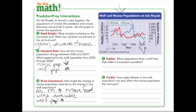Question four asks what adaptations a wolf has that make it a successful predator. When I think of a wolf, I think of a dog but meaner. So probably sharp claws and teeth so they can attack and eat their prey, and speed.